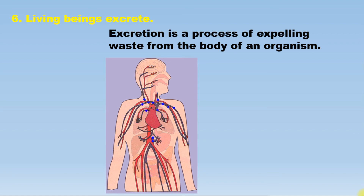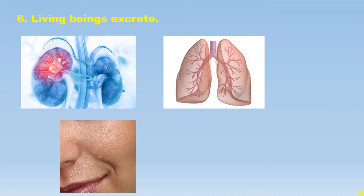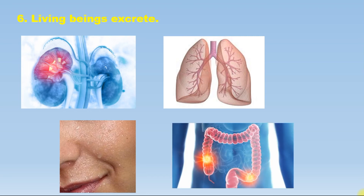The next common characteristic is that living beings excrete. Excretion is the process of removing waste from the body. Our body performs many activities, and due to this, some amount of unwanted waste is produced. The body needs to remove this waste, otherwise the body gets affected. The major excretory organs in our body are: kidneys, through which urine is removed; lungs, through which carbon dioxide is removed; skin, through which sweat is removed; and the colon, through which feces is removed.